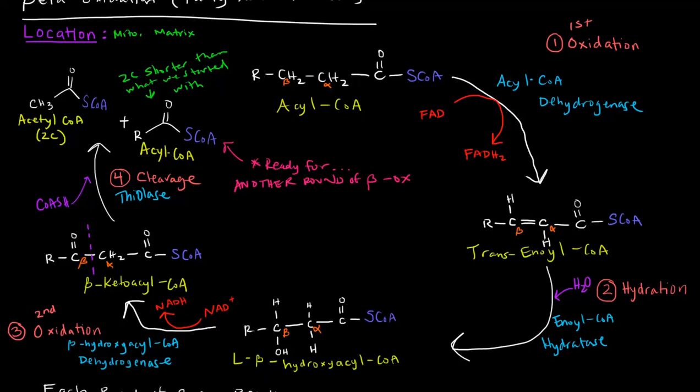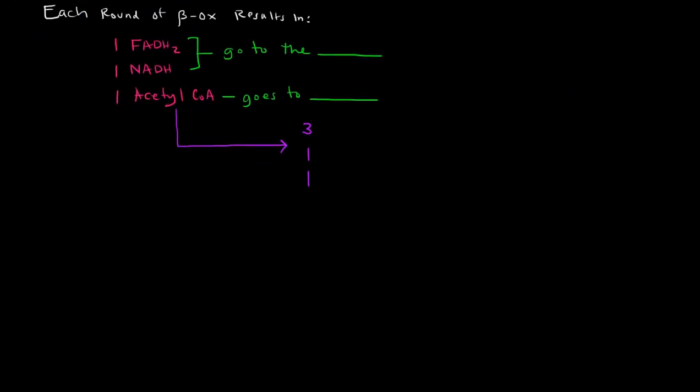Each round of beta-oxidation results in one FADH2, one NADH, and one acetyl-CoA. The first oxidation step yielded an FADH2, the second one yielded an NADH, and both of those things will go to the electron transport chain to be re-oxidized for energy. What about this acetyl-CoA, though? Well, where have we seen acetyl-CoA before? We saw it in the TCA cycle, the Krebs cycle. So it'll go to the Krebs cycle. And when one acetyl-CoA goes through the Krebs cycle, we get three NADHs, we get one FADH2, and we get one GTP.